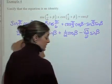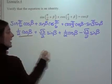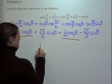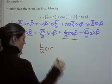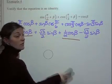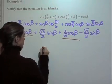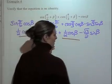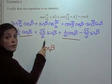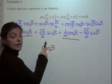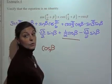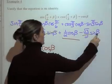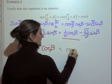We're looking for our like terms. We have 1 half cosine beta and 1 half cosine beta — 1 half plus 1 half is 1, so that's cosine beta. And then we have square root of 3 over 2 times sine beta minus square root of 3 over 2 times sine beta, so those cancel. And so that equals cosine beta — we have verified the identity.